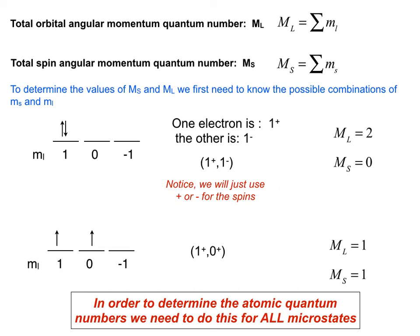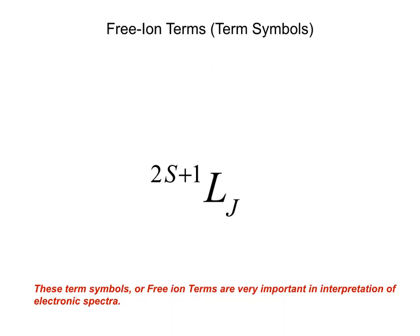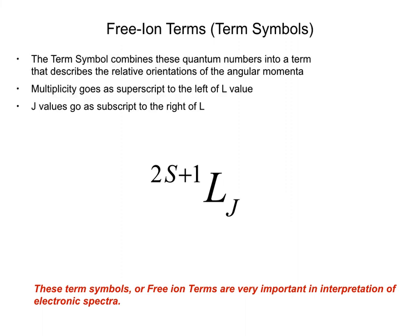To determine electronic transitions and term symbols, we have to define quantum numbers for every single possible microstate. But first, let's introduce the term symbol itself — sometimes called the free ion term. The term symbol combines quantum numbers into a term that describes the relative orientation of the angular momentum.